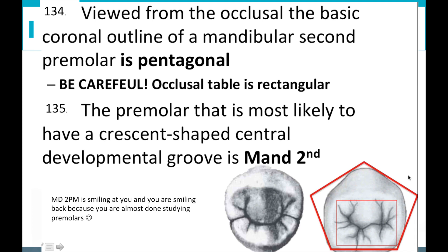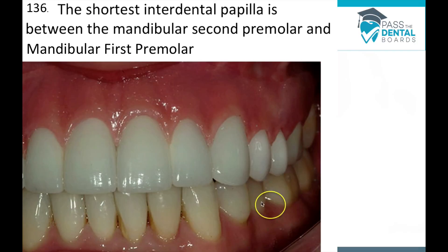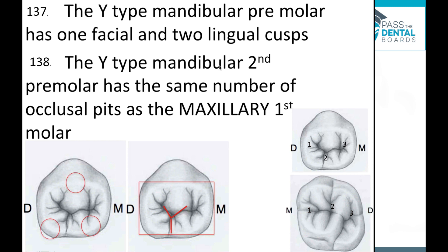A way to remember the crescent shape is to think of it as a smile — the mandibular second premolar is smiling at you. The shortest interdental papilla is between the mandibular second premolar and the mandibular first premolar, because the mandibular first premolar is a really small tooth. Now looking at the Y-type: it's called Y-type because of the shape the developmental grooves take, almost forming a Y.